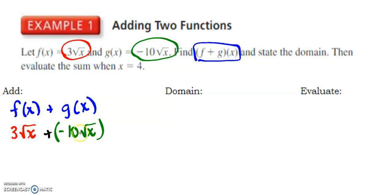Well, since both of these have a square root of x, those are considered like terms. 3 minus 10 is -7√x. So there is my new function.